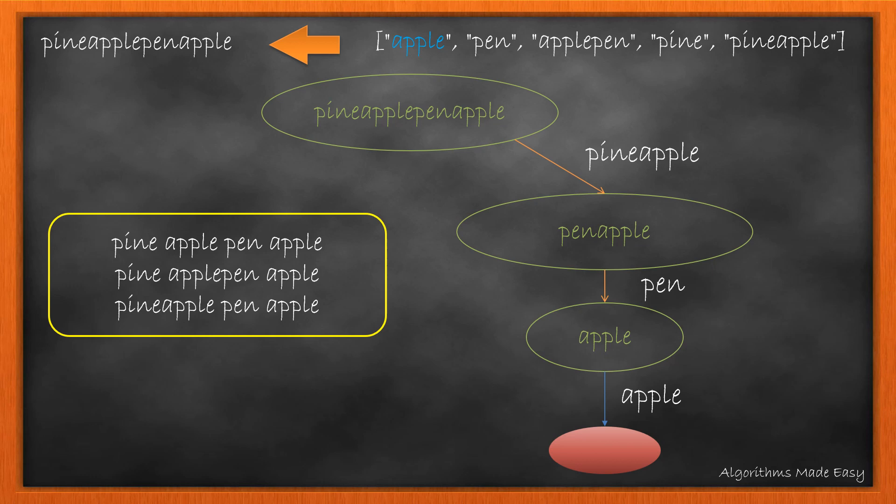Now, what if instead of empty string, we were left with a smaller substring at the end that did not match with the word in the dictionary. In that case, the splitted string would not be added in the result as we could not make the exact string by using the words in the dictionary.